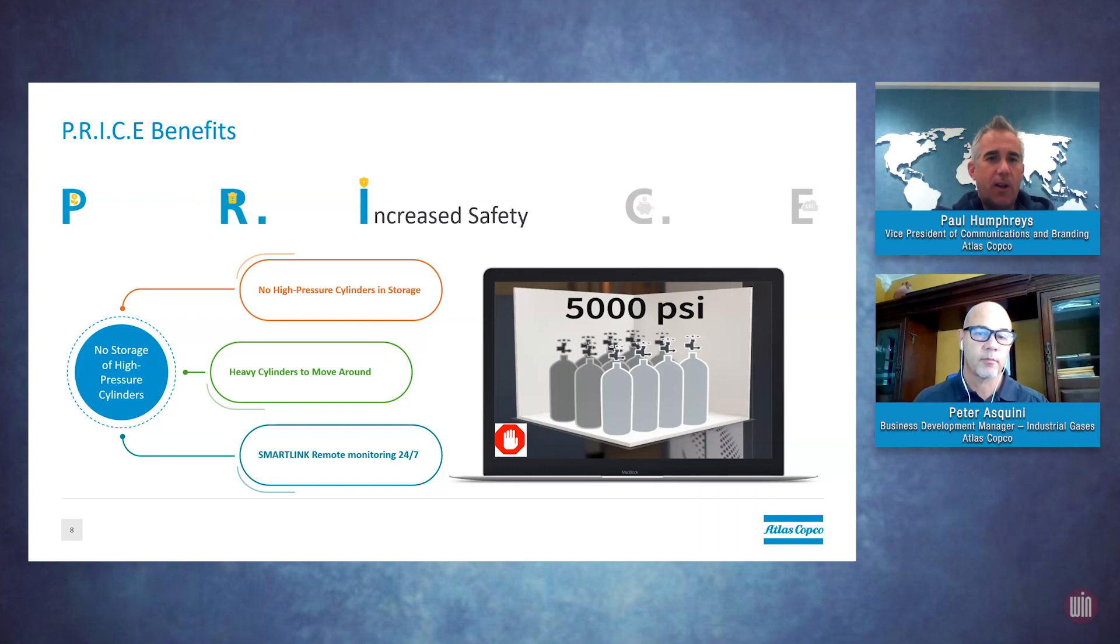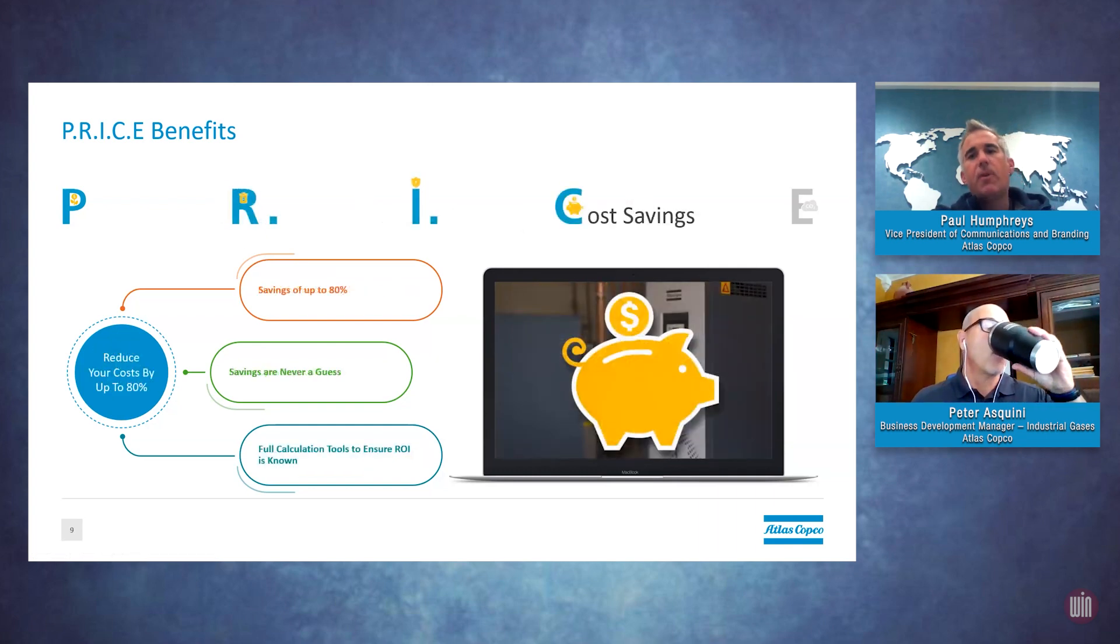Coming back to cost on the C in PRICE. We have payback samples, but you say savings are never a guess - what do we mean? We'll talk about what we think your savings could be, but in practice we need to know specific conditions of that installed site. We have ROI calculators to punch in actual site conditions - kilowatts, size of equipment, et cetera - and come up with what the actual savings is for gas generation, our Atlas Copco generators versus delivered gas source. A customer knows exactly what that return on investment is and can make an informed decision on whether to invest and move forward.